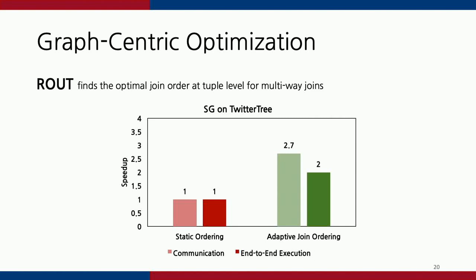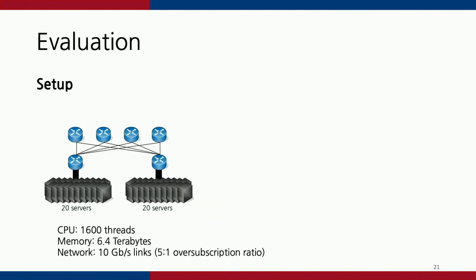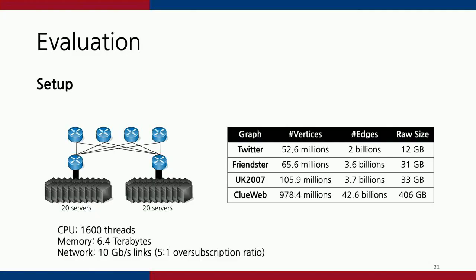We compared our approach with the best static ordering and found our operation works significantly better. For evaluation, our data center has two racks, each with 20 servers — 40 servers in aggregate, with 1,600 CPU threads and 6.4 terabytes of memory. All network links are 10 Gbps, resulting in a 5-to-1 oversubscription ratio, meaning cross-rack communication costs 5x more than within-rack communication. We tested on four real-world graphs, all at the billion-edge scale.